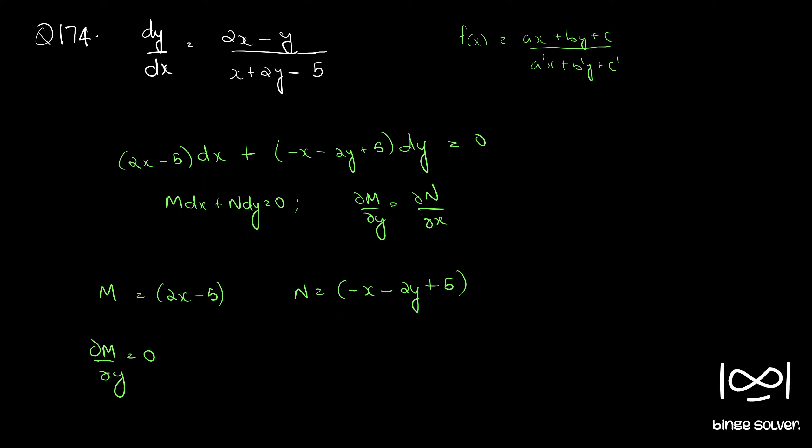Okay, there is no y term. Okay, there was a mistake. Here it is not 5 but y. 2x - y.